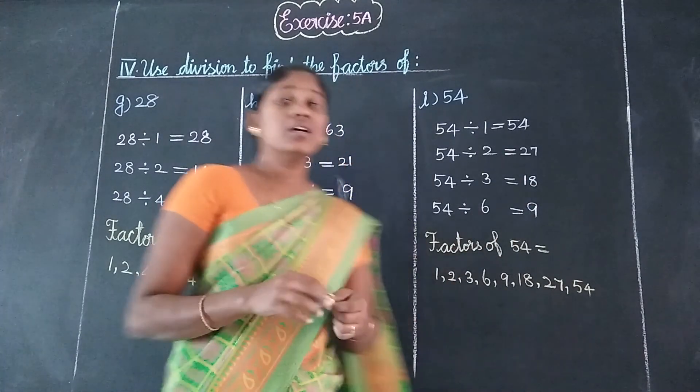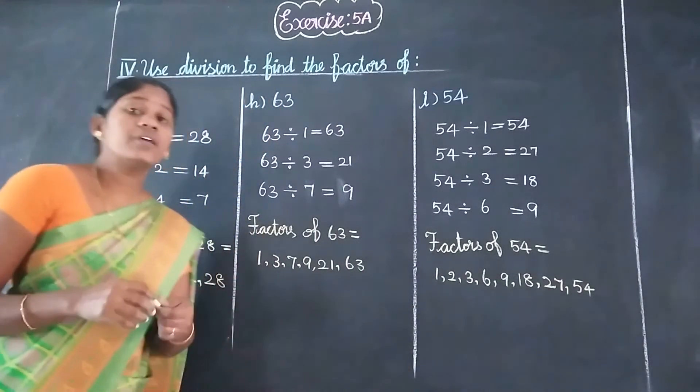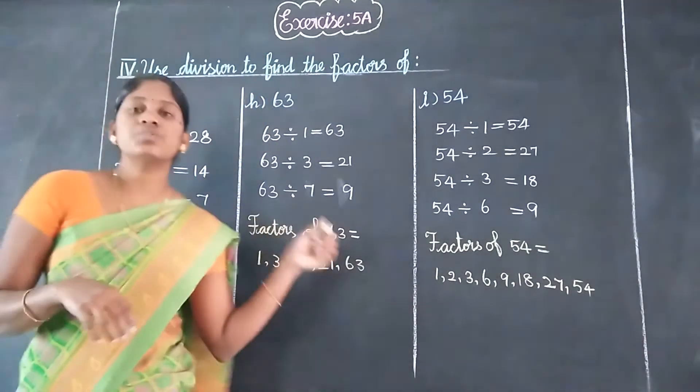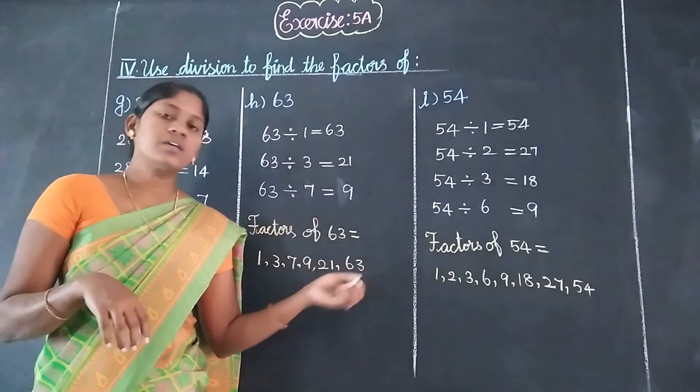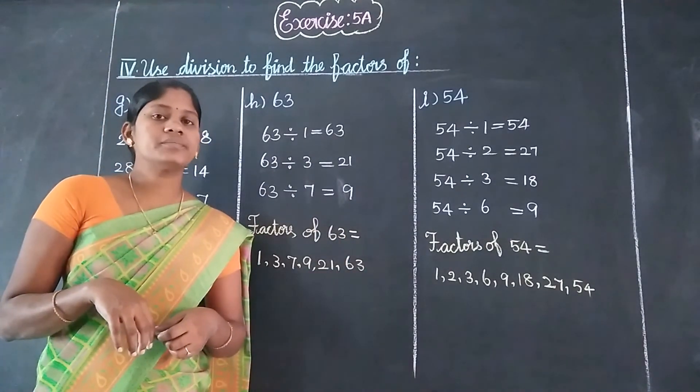So all three numbers are finished. Exercise 5A, fourth problem, using division to define the factors. That is finished. Thank you students.